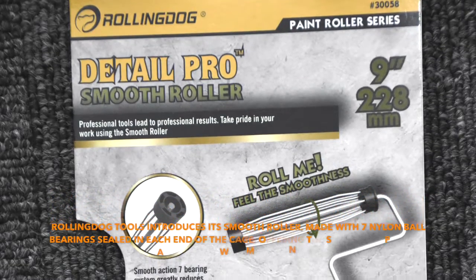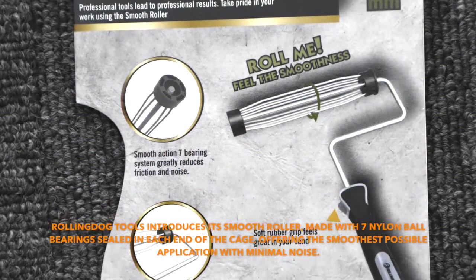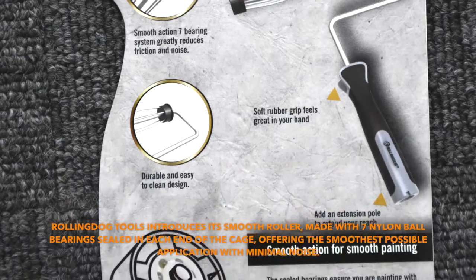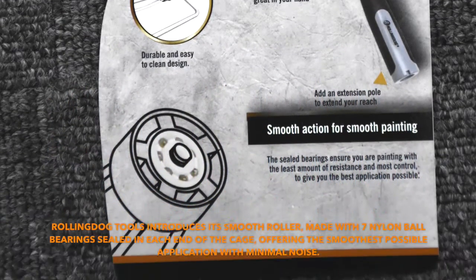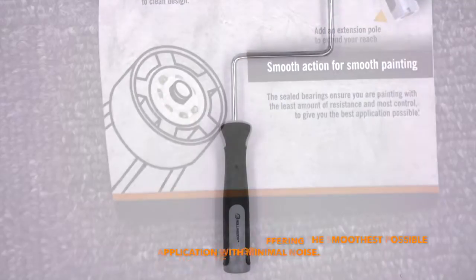Rolling Dog Tools introduces its smooth roller made with seven nylon ball bearings sealed in each end of the cage, offering the smoothest possible application with minimal noise.